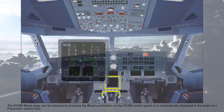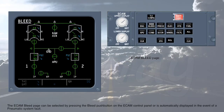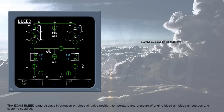The ECAM bleed page can be selected by pressing the bleed push-button on the ECAM control panel, or is automatically displayed in the event of a pneumatic system fault. The ECAM bleed page displays information on bleed air valve position, temperature, and pressure of engine bleed air, bleed air sources, and systems supplied.